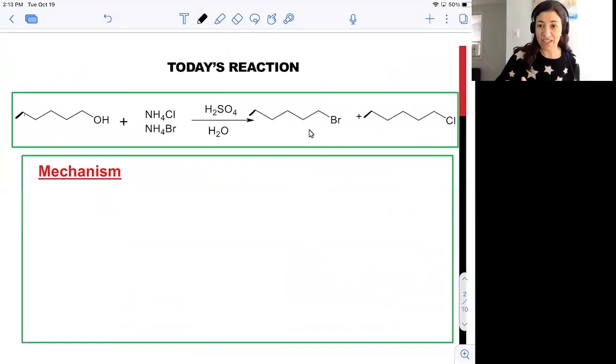Let's take a look at the specific substrate we'll be using, which is one hexanol. We're going to treat one hexanol with two nucleophiles: ammonium chloride as the source of chloride ion and ammonium bromide as the source of bromide ion. We're going to carry this out using water as a polar protic solvent, and we're going to add sulfuric acid to the mixture.